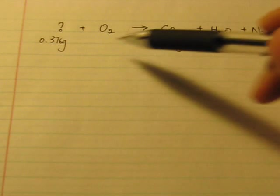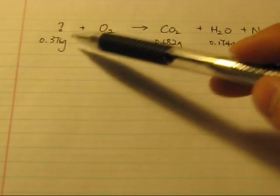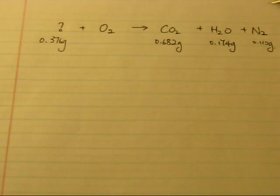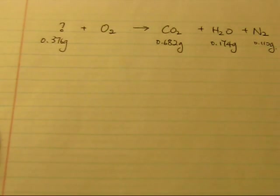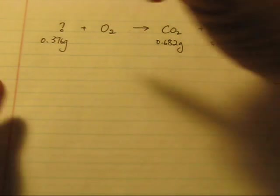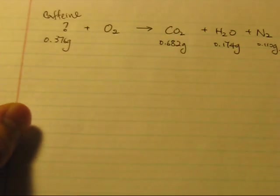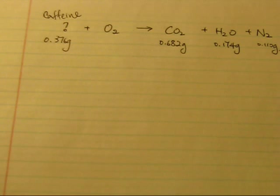And below the chemical equation, I also wrote down the mass of each compound. And the question mark is the compound, the empirical formula that we are trying to find out, which is the caffeine. But it is the empirical formula.